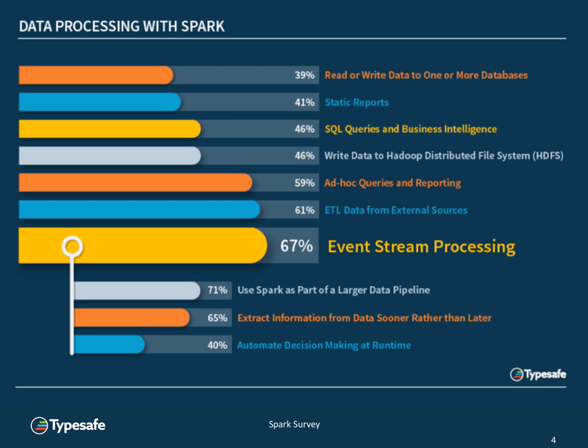We also asked what kind of things people want to do with Spark — what they think will be its most useful applications. By far the biggest percentage was people who want to process event streams as they arrive in the system. This is one of the big limitations of Spark's predecessor MapReduce, which was designed for batch mode processing where you'd aggregate data in your file system for hours or a day, then run a big batch job. That's still very important, but a lot of people also want to get answers out of data faster — either handling individual events or processing small batches, say after a second or a minute.